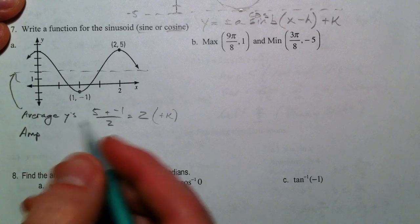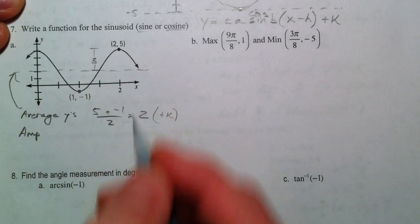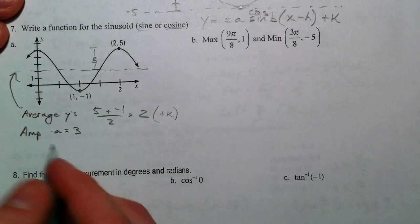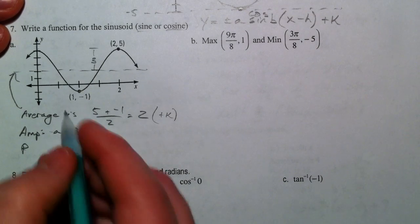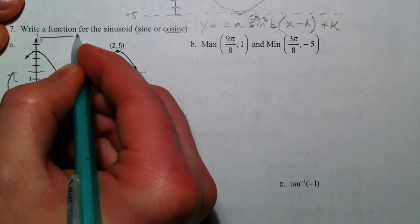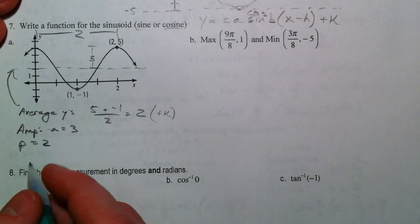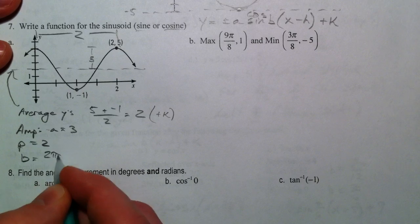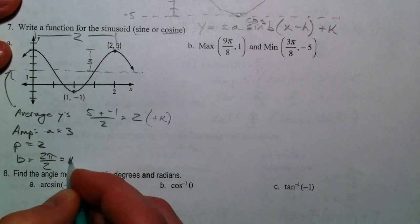Amplitude: I can tell a equals 3 because I went up 3 and down 3 from my midline. Period: peak to peak, period equals 2. So to find b, b equals 2 pi divided by the actual period. So b has to be pi.